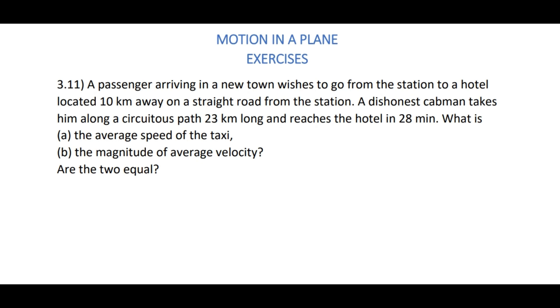Hello students, in this video we are going to discuss problem 3.11 from motion in a plane. A passenger arriving in a new town wishes to go from the station to a hotel located 10 kilometers away on a straight road from the station. A dishonest cabman takes him along a circuitous path 23 kilometers long and reaches the hotel in 28 minutes.